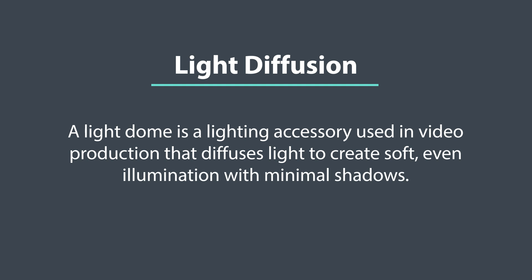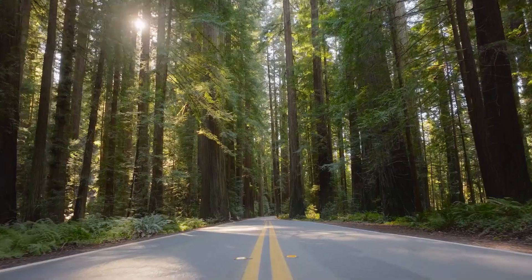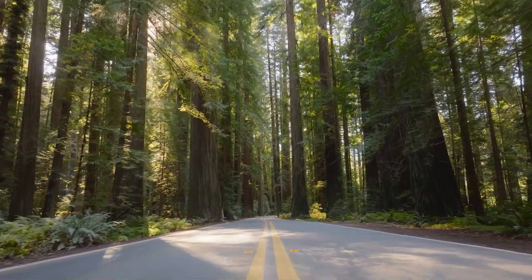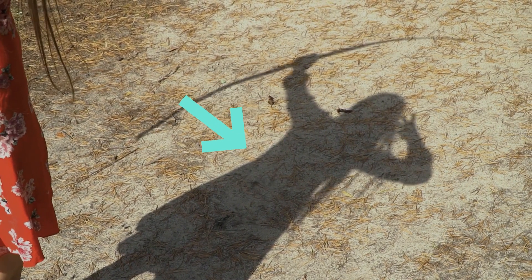But before we get to the difference between small and large light dome, what is a light dome, or at least what is light diffusion? Light diffusion is the idea of softening light, so that you create softer, more gradual shadows, and it can help hide imperfections on the subject, making a more flattering overall image. Think of light diffusion as when you're outside — the sun is very bright and the shadows are very well defined and sharp on the edges, whereas when it's cloudy, partly cloudy, or overcast, those shadows are either very soft or almost gone. That's kind of what a light dome can do.